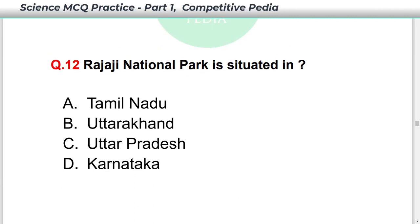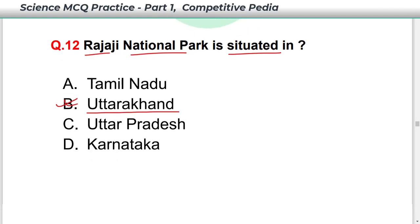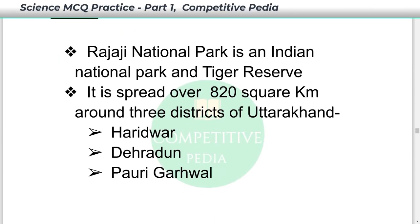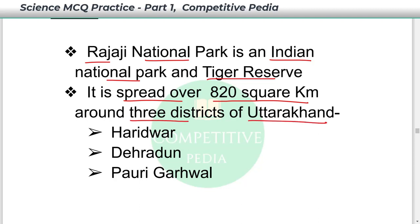Rajaji National Park is situated in Uttarakhand — option B. Rajaji National Park is an Indian National Park and Tiger Reserve. It is spread over 820 square kilometers across 3 districts of Uttarakhand: Haridwar, Dehradun, and Paudi Gadwal.